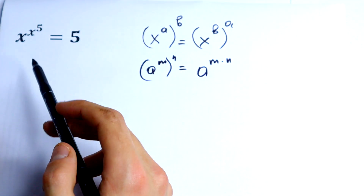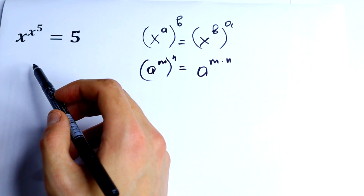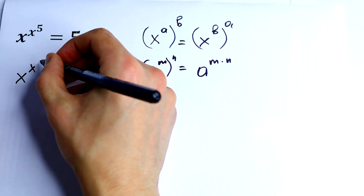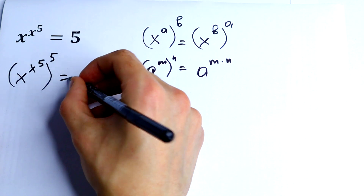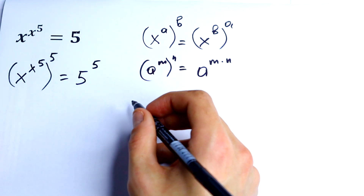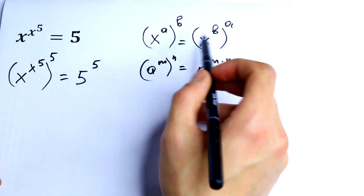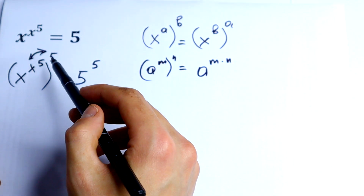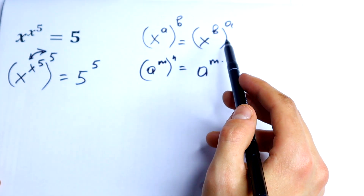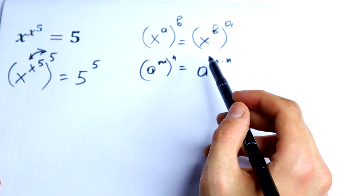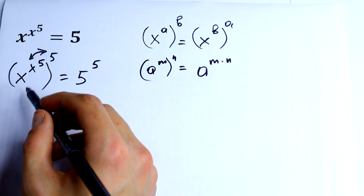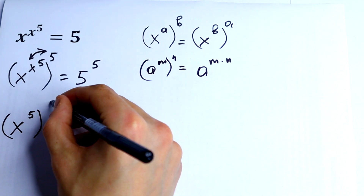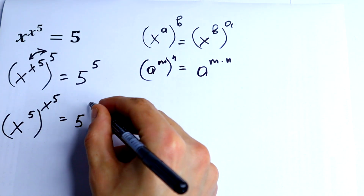So what can we do right here? We raise both sides to the power 5. Take a look: x to the power x to the power 5, raised to the power 5, equal to 5 to the 5th power. Using the interchange rule we can swap these exponents — the x to the 5th power and 5th power. So we get x to the 5th power all raised to the x to the 5th power, equal to 5 to the 5th power.